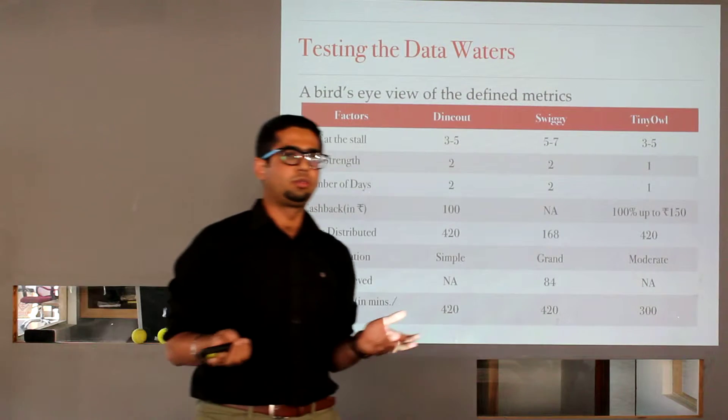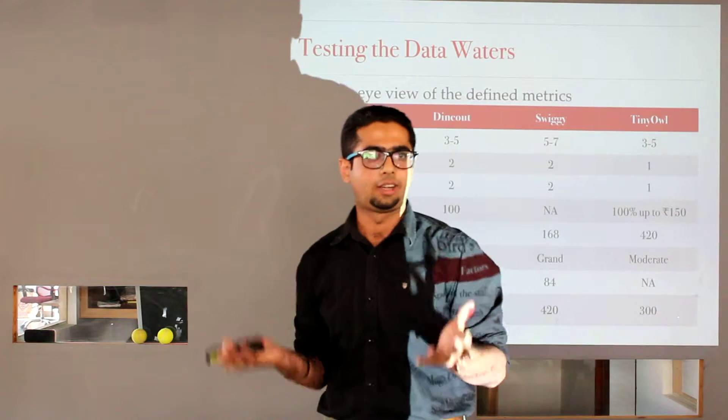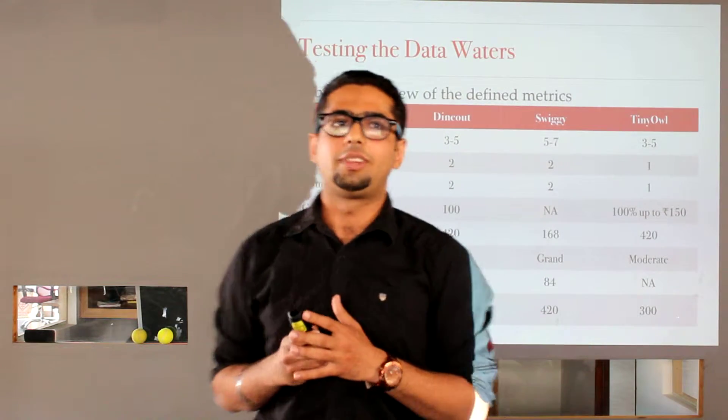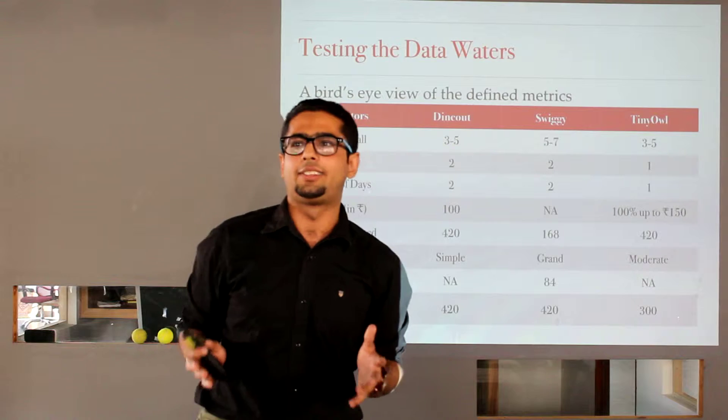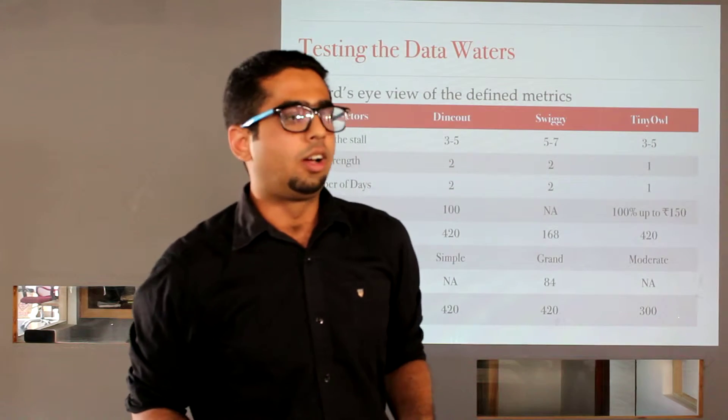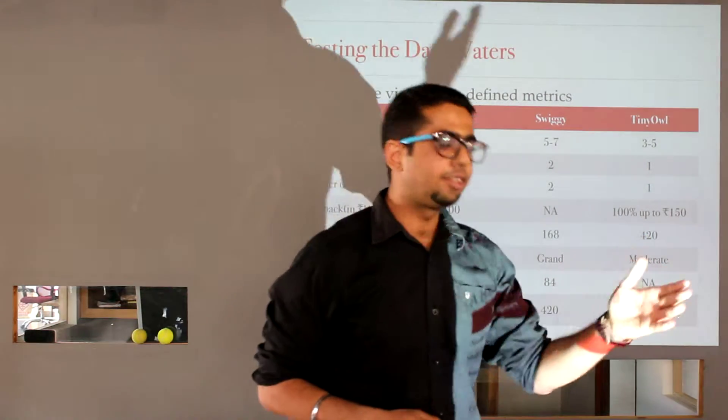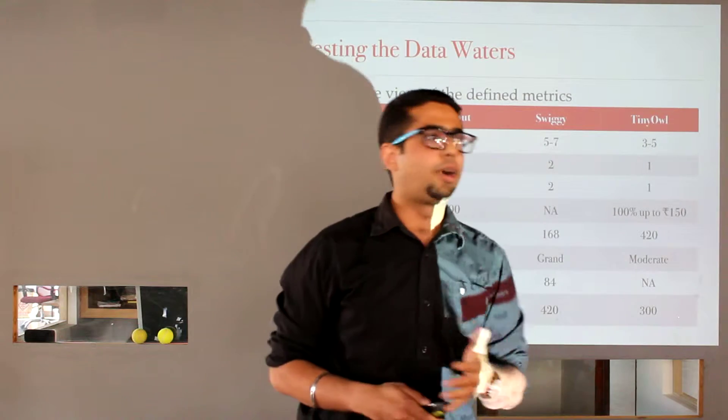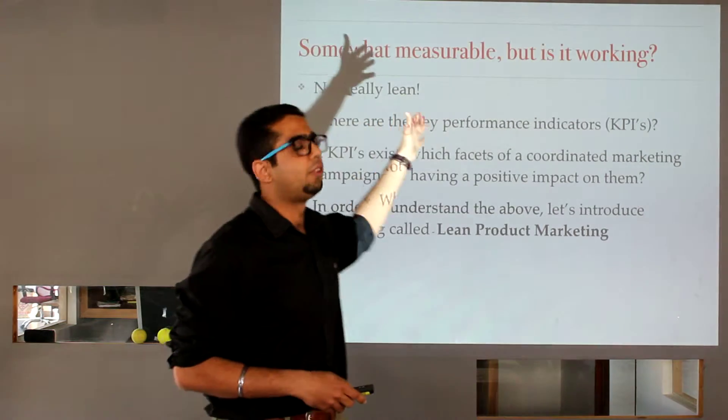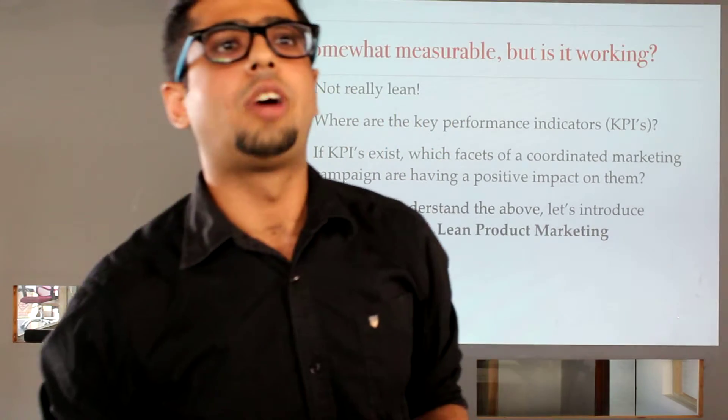So, we have had a basic overview. We have been into a bit of details. We have seen a bit of data. But, it still doesn't make sense, does it? I mean, this is what happens in real life scenarios. A chief marketing officer will come to me, the product manager, and tell me, I have this, this and this. It's somewhat measurable. But is it actually working? So, how do we do that? How do we find that out?